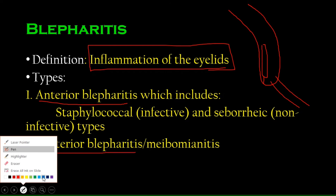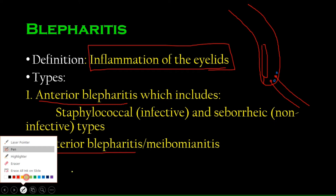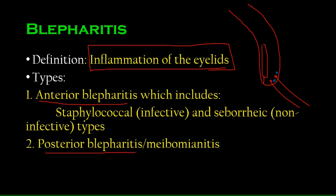We also have the glands of Zeis and glands of Moll, and the eyelashes have their own follicles. The difference between anterior and posterior blepharitis is: if the inflammation is occurring towards the anterior side, involving the glands of Zeis, glands of Moll, and hair follicles, that is anterior blepharitis.